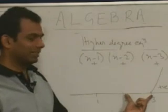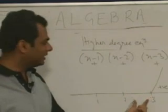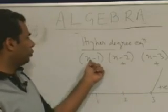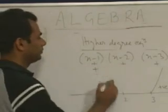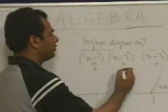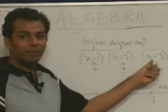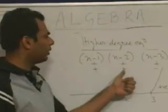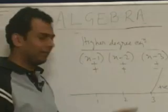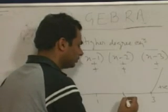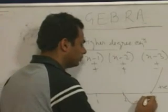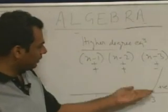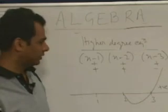Now between 2 and 3, let us say 2.5. If I choose 2.5, the factor (x-1) gives positive, (x-2) gives positive, but (x-3) gives negative. So positive into positive into negative gives negative — my graph will be below the line between 2 and 3, giving negative values.